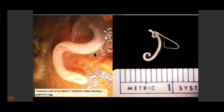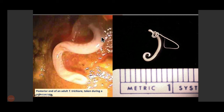Colonoscopy shows the thicker posterior end of the worm protruding into the colonic lumen, while the very fine, thin anterior portion is embedded deeply inside the colonic mucosa. When removed colonoscopically, the specimen demonstrates clearly how extensively the thin thread-like anterior part penetrates inside the colonic mucosa.